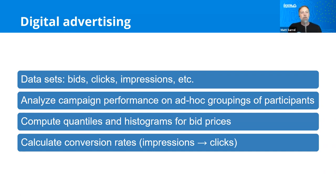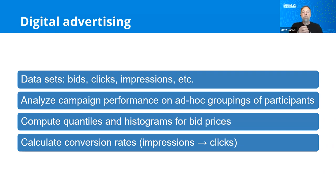One thing that Druid does is you can hold your streaming data as it's coming in — that's queryable. And then you can also write the streaming data over time to deep storage, and that's queryable via historicals. When you want to run reports, it gives you excellent performance to combine streaming data and historical data in a single report — something like 'show me what happened with my ads today and two weeks ago and six months ago.'